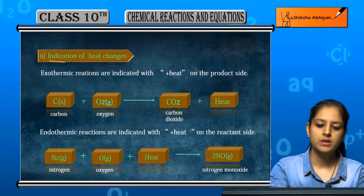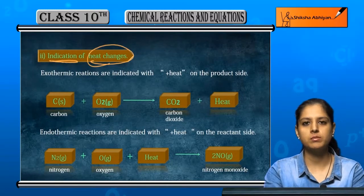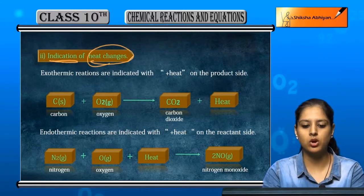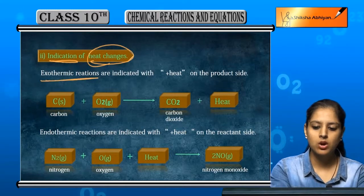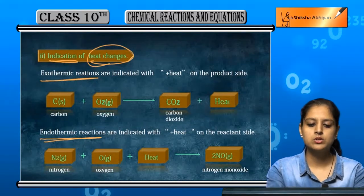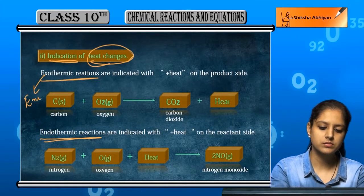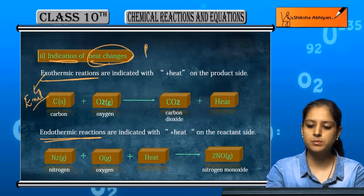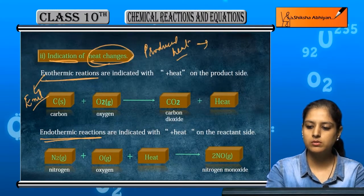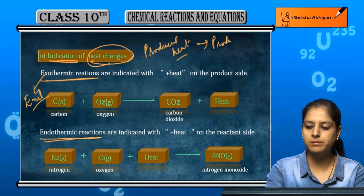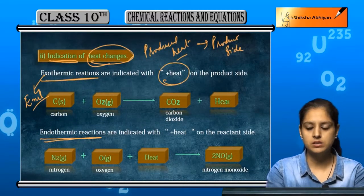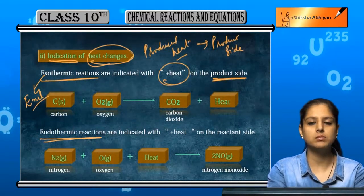And what can we do? We can indicate heat changes. Because we have seen temperature change while a chemical reaction is going on. So exothermic and endothermic, we can show both heat changes. So if it is exothermic, it means heat is produced. So we will write it on the product side. We will write plus heat on the product side if it is exothermic reaction.